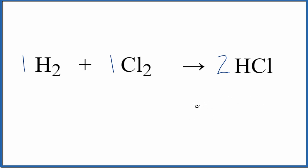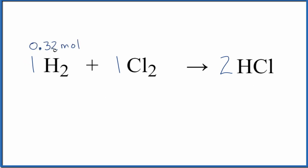The key is the ratios come from the balanced equations. That's a big reason we balance chemical equations. So let's say, for example, we had 0.32 moles of H2, just a number I made up for the problem.